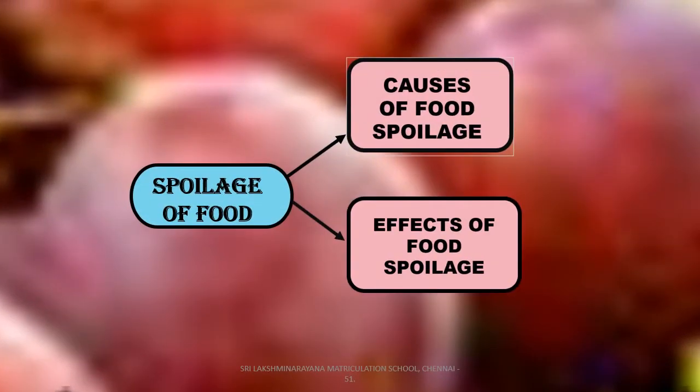First, we will see about spoilage of food. Some food items like milk, meat, fruits and vegetables will not be fresh for a long time. They get spoiled easily. These are known as perishable foods. When we see changes in the normal state of food, it is called spoilage of food.